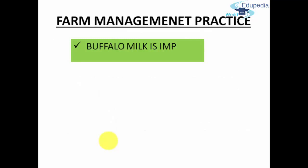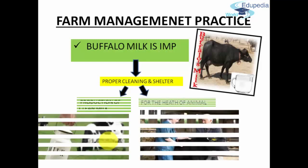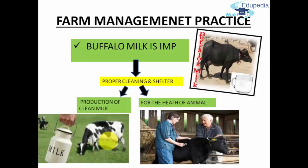Since buffalo milk is so important, proper cleaning and a proper shelter for buffalo are required — for two reasons. First, because it gives us milk, we need good quality milk from buffalo. Secondly, it is very important for the health of the buffalo itself. That is why we need to take care of where we are keeping these cattle. The place of stay and shelter conditions should be neat and clean, with lots of sunlight and shade so they can rest.